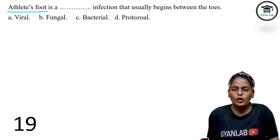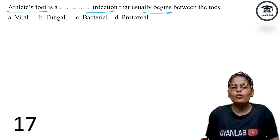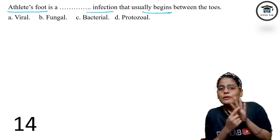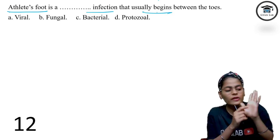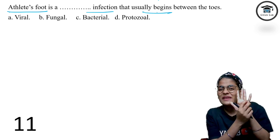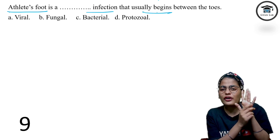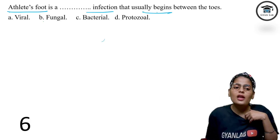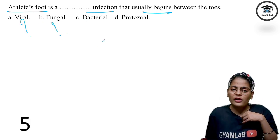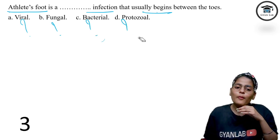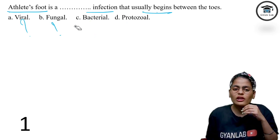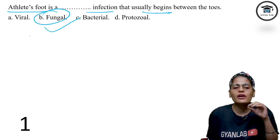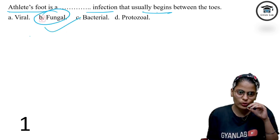Athlete's foot — what type of infection is this? It mostly occurs between the toes, especially the last small toe, which becomes wet and red, especially in the rainy season. Since it occurs in moisture-prone areas where water remains trapped, fungal infections are more common in such places. So athlete's foot is a fungal infection.